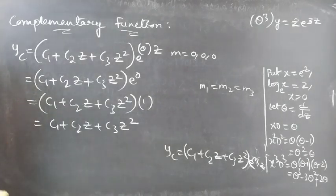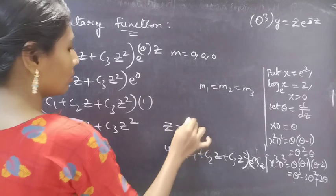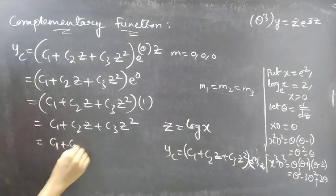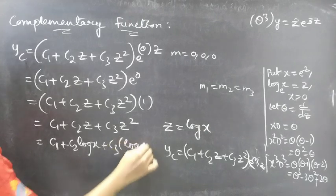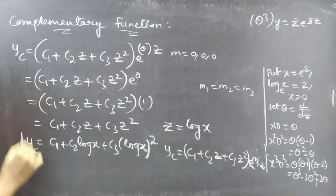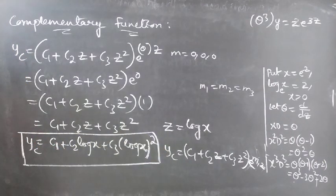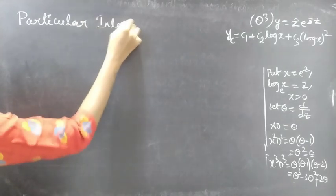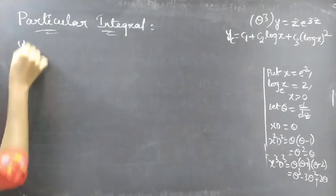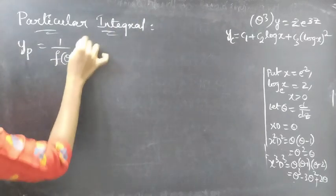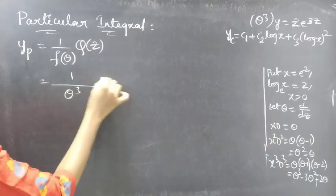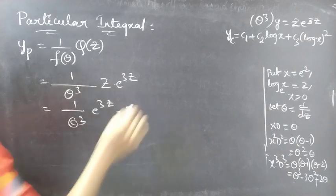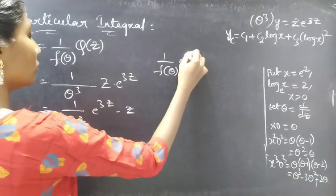Now we are having yc in terms of z. Let's write in terms of x by replacing z by log x. So yc equals c1 plus c2 log x plus c3 (log x) squared. This is our required yc. Now let's find yp. We will find yp using 1 by f(theta) into Q(z), where Q(z) is z times e power 3z. This is of the 1 by f(theta) into e power az times v form.